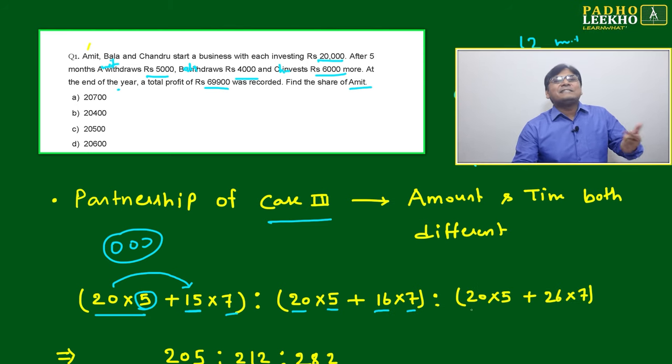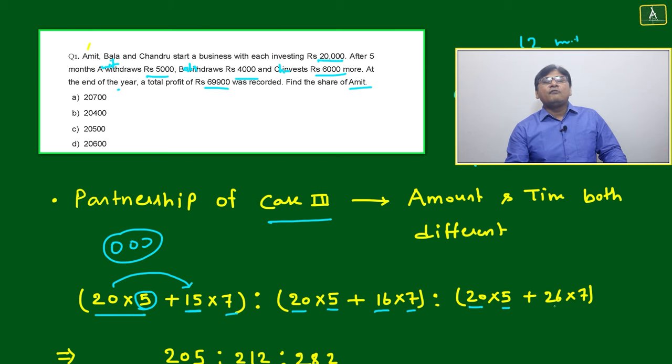And Chandru, he has invested extra. Means 20,000 for 5 months. After that, it increases by 6k, so 26k for 7 months.